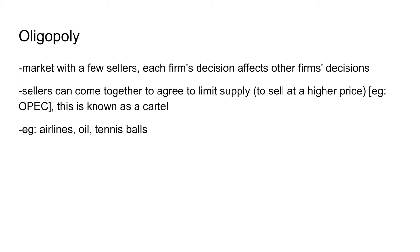In an oligopoly the market has a few suppliers, and unlike in a monopolistically competitive market each firm has to watch out for other firms' choices and actions. In an oligopoly, sellers can actually come together and agree to lower their supply so they can sell at a higher price. This is known as a cartel, and it is illegal in the United States because of our antitrust acts.